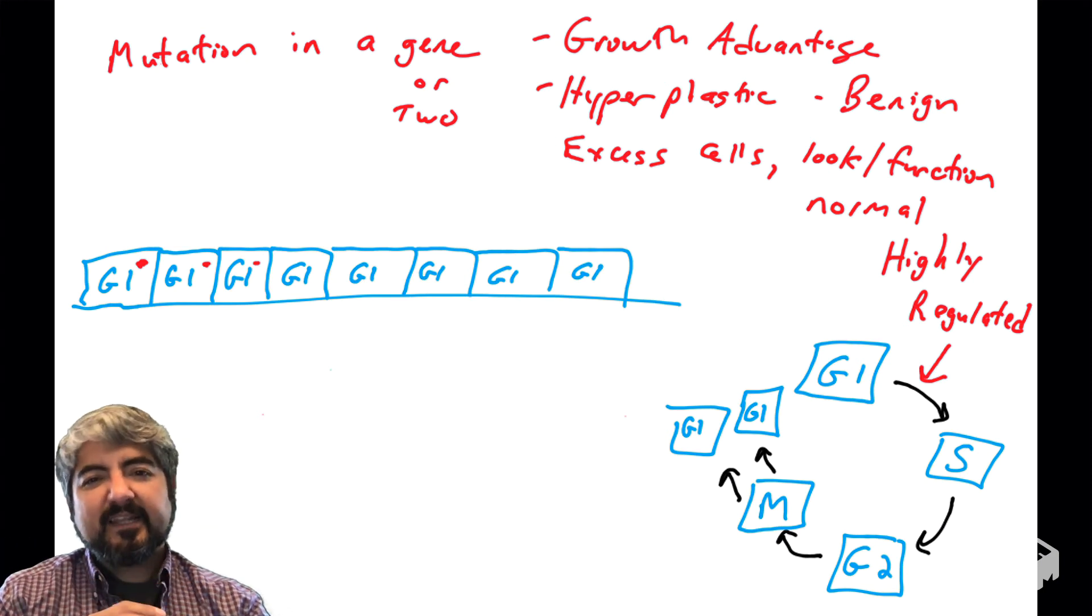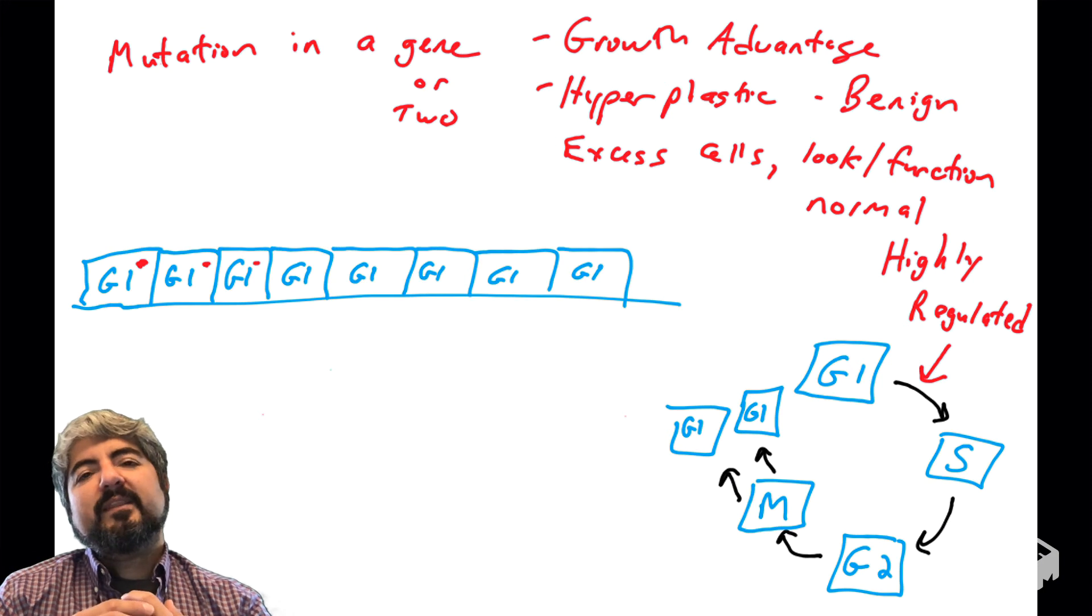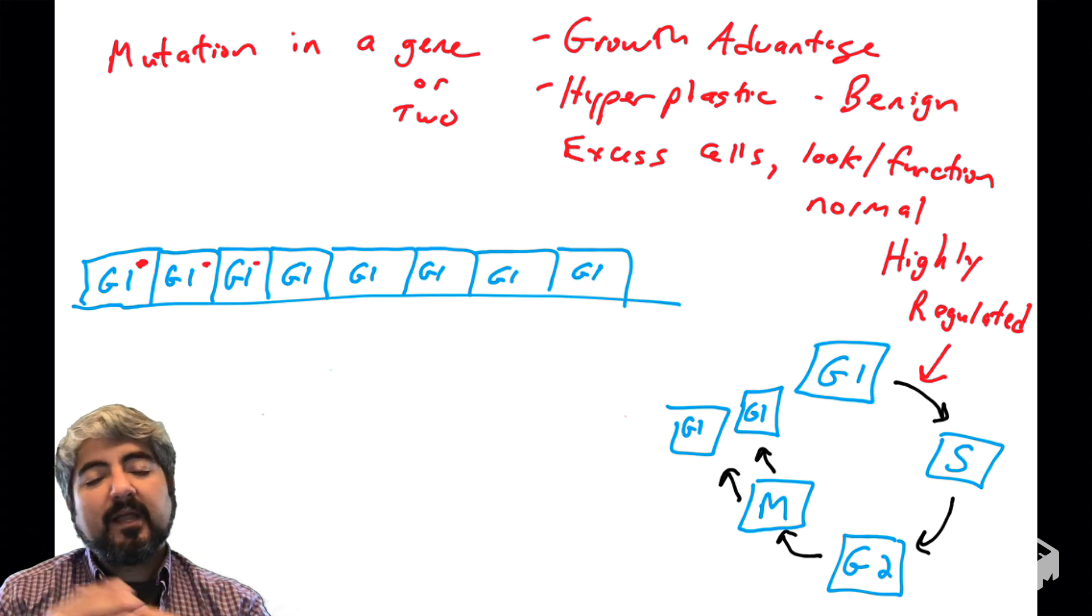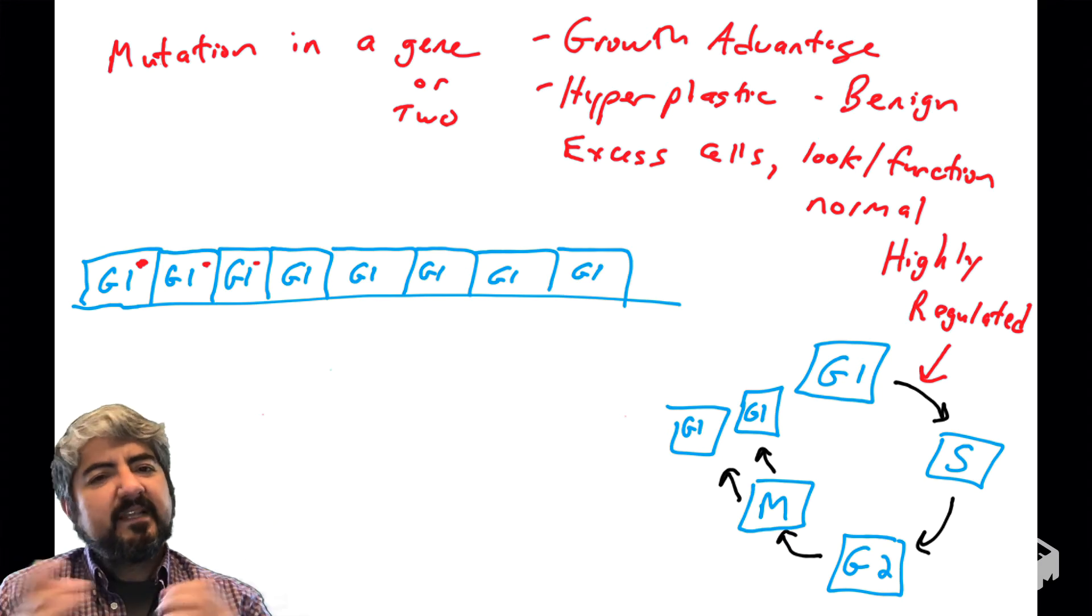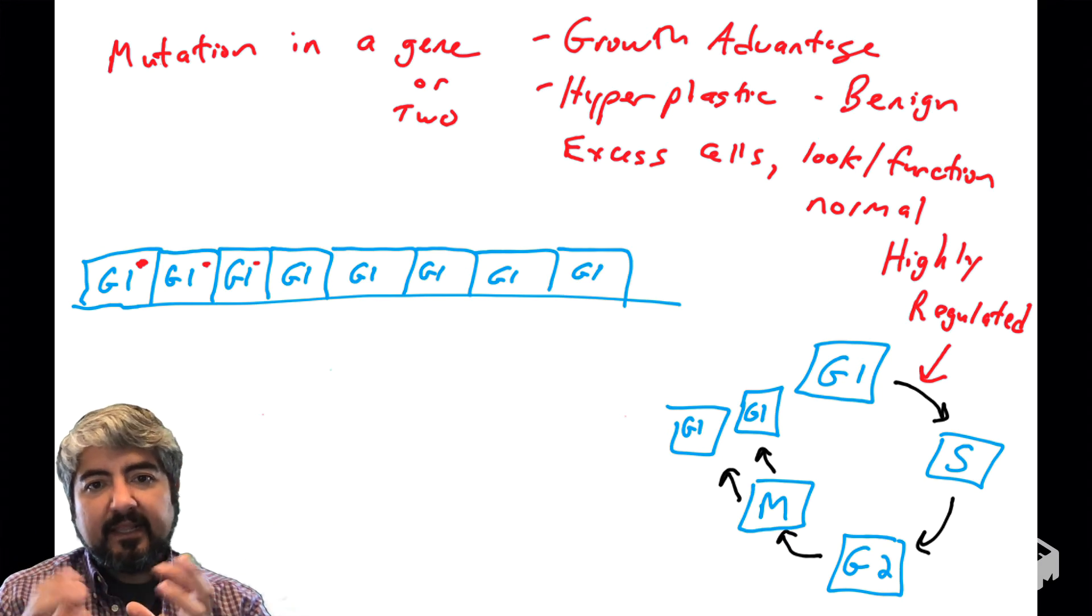So they might produce like a benign, small benign growth. We would say these cells are hyperplastic or hyperplasia. A little too much growth. But again, this is not cancer. These are benign cells. They're not going to damage organs and tissues.